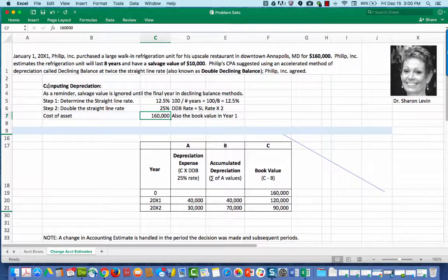We have the cost of our asset is $160,000, which is also the book value at the beginning of the year. I created a depreciation table here to help us stay organized. Notice it has the year and columns A, B, and C.